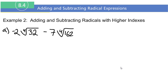We're going to example number two, continuing with adding and subtracting radicals but now with higher index numbers. Let's look at problem letter A. We have negative two times the fourth root of 32 minus seven times the fourth root of 162. Remember, our radicals must have the same index and the same radicand to add or subtract them. Since 32 and 162 are not the same, we need to simplify them first.